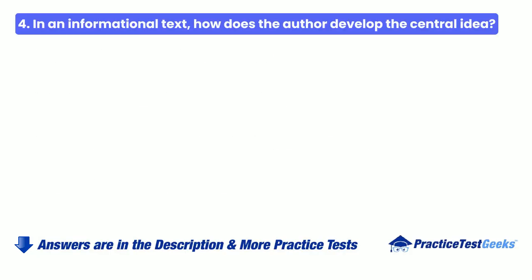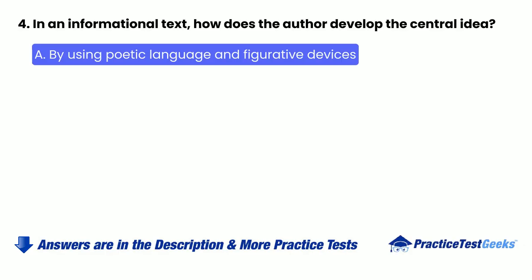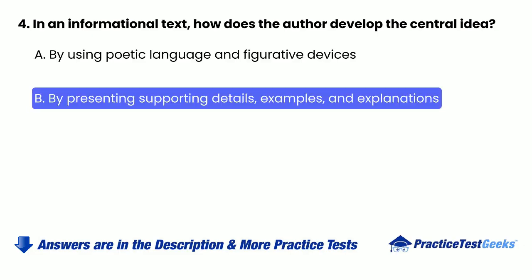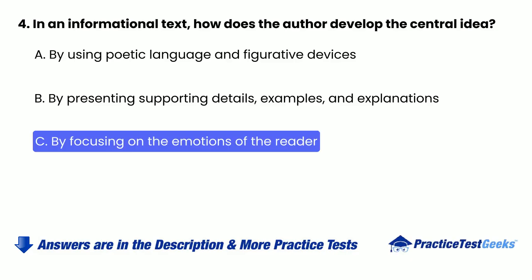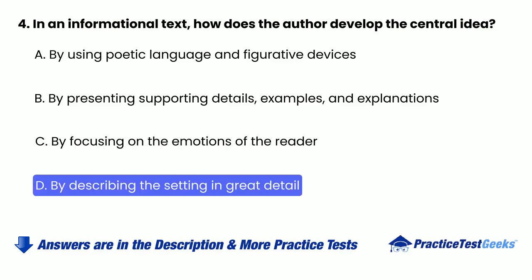4. In an informational text, how does the author develop the central idea? A. By using poetic language and figurative devices. B. By presenting supporting details, examples, and explanations. C. By focusing on the emotions of the reader. D. By describing the setting in great detail.